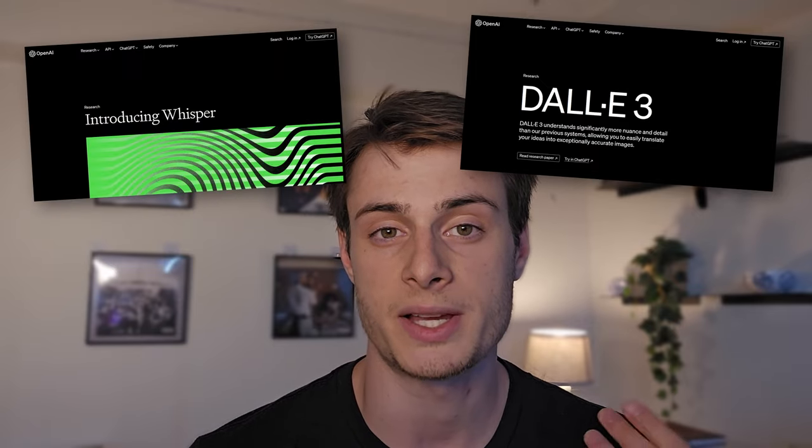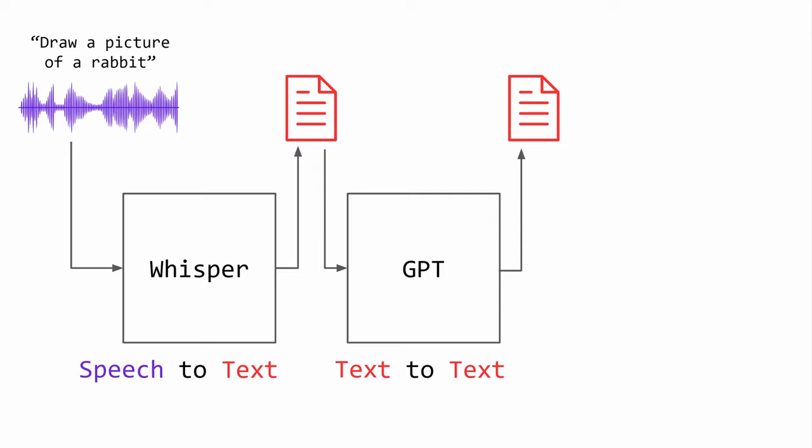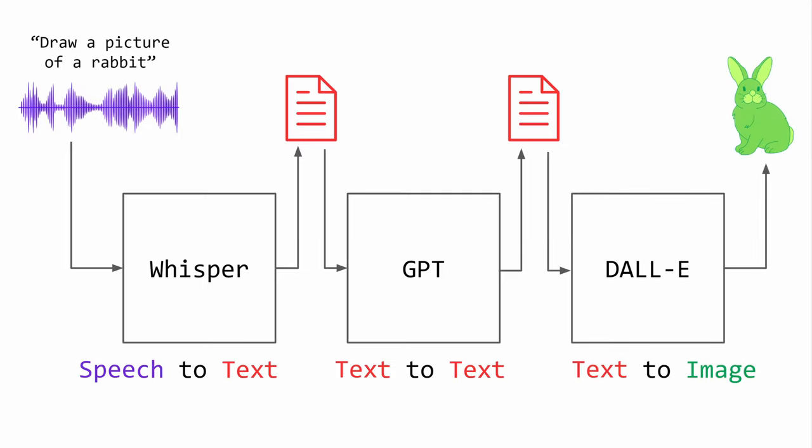It also uses DALL-E 3, likely Whisper, and some sort of text-to-speech model. If we speak to ChatGPT and ask it to draw a picture of a rabbit, this audio will first be converted to text by Whisper, then it will use the LLM ChatGPT to interpret this request, and then that response will be passed off to DALL-E 3 for the actual image generation. We're performing audio-to-image, but there's no actual audio-to-image multimodal model. Instead, we're using an audio-to-image pipeline that actually uses three multimodal models under the hood. Text is used as the common factor to tie all of these modalities together because of the power and expressivity inherent to natural language.